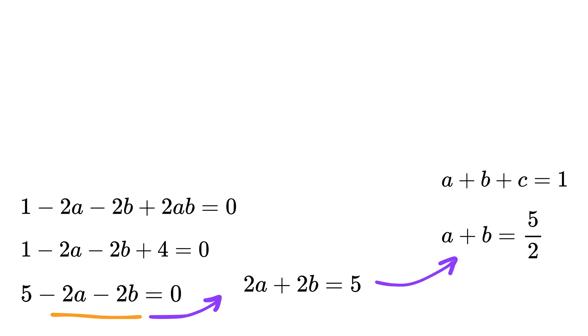Now go back to the perimeter condition again. We had A plus B plus C equals 1. But now we have found that A plus B is 5 by 2, which means C equals 1 minus 5 by 2. That gives us C equals minus 3 by 2.